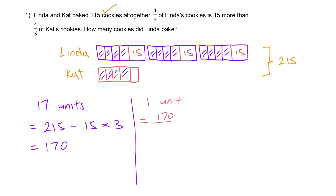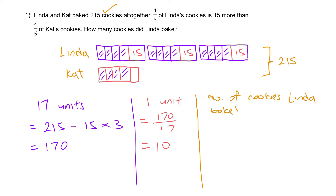From here I can figure out what 1 unit is: 170 divided by 17 equals 10. To find the answer — how many cookies did Linda bake — Linda has 12 units plus the extra 15. So 12 times 10 gives 120, plus 15 plus 15 plus 15 equals 45. Therefore the answer is 165 cookies.